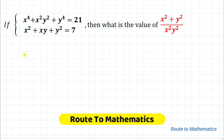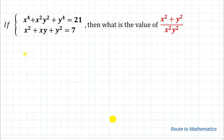Hello everyone, welcome to Root2 Mathematics. In this video we are going to solve this interesting system of equations. The given question is: if x⁴ + x²y² + y⁴ = 21, and the second equation is x² + xy + y² = 7, then what is the value of (x² + y²) divided by xy?